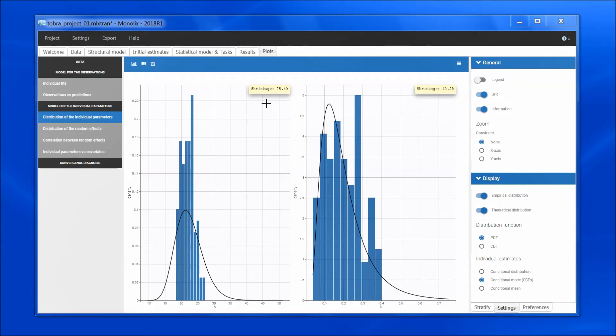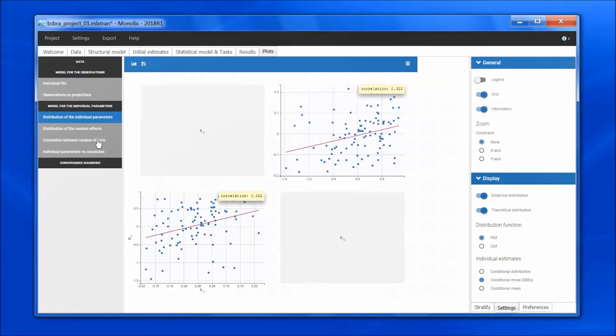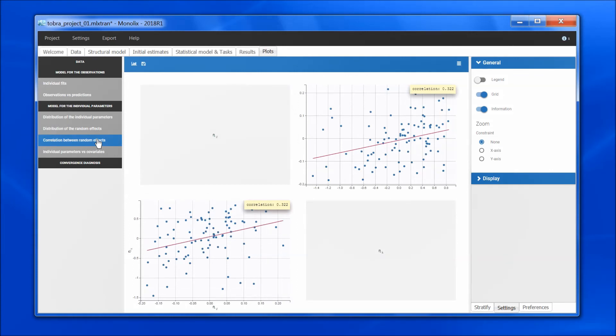This situation is a problem because it will bias all the plots that use the EBEs, such as the correlation between the random effects for the volume and for the elimination rate, with a correlation coefficient of 32%. Let's see if this is really true.